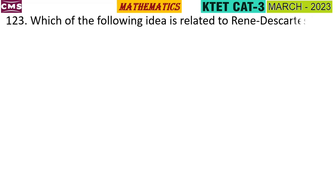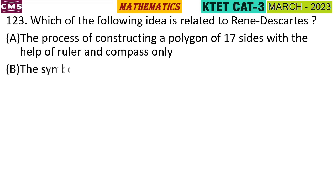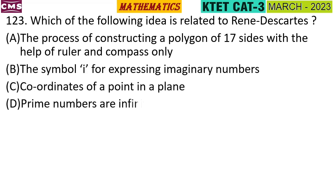Question 3: Which of the following ideas is related to René Descartes? René Descartes is a French philosopher and scientist. The options are: constructing a polygon of 17 sides with ruler and compass only; the symbol 'i' for expressing imaginary numbers; coordinates of a point in a plane; prime numbers are infinite. The correct answer is Option C: coordinates of a point in a plane.